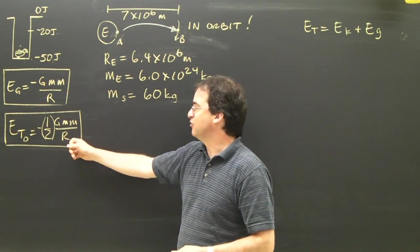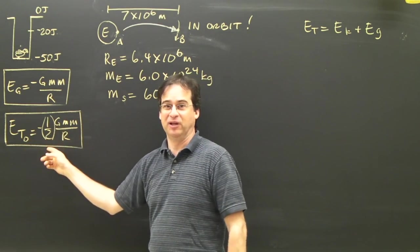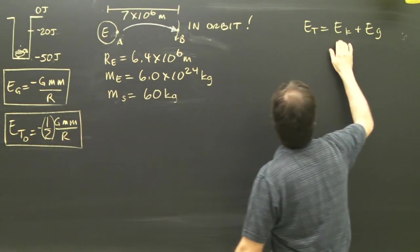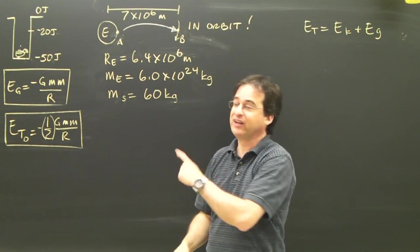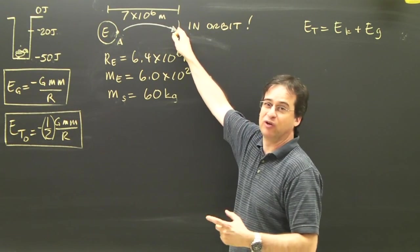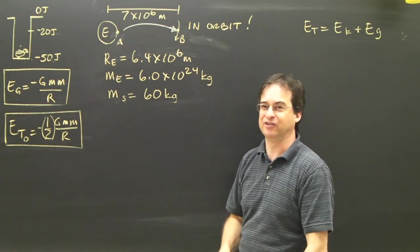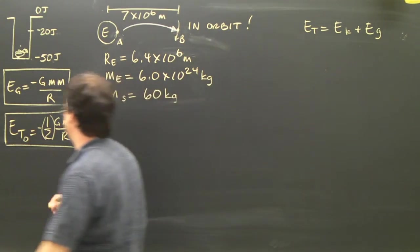When it's in orbit, the total energy is given by this formula. You don't have to actually find out the kinetic energy and the gravity separately—it's a simple formula. But for finding out how fast something is going in orbit, I need to know what exactly the kinetic energy in orbit is. And it ends up being very simple.